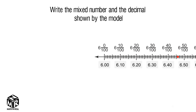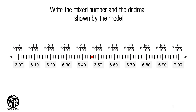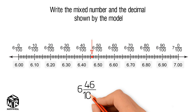Let's try another example. Write the mixed number and the decimal shown by the model. We see that this number line starts from six and ends at seven. The number line is divided into one hundred equal parts. Each part represents a hundredth. To find the red dot, we start counting from six and forty hundredths because it's closer than six. One by one we add one hundredth to six and forty hundredths until we reach the red dot. We get six and forty-six hundredths. We can write six and forty-six hundredths as a mixed number and as a decimal.